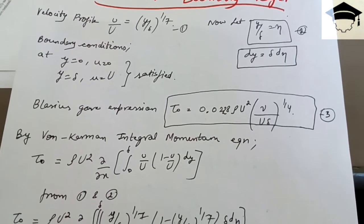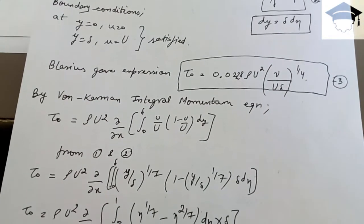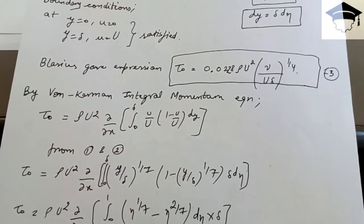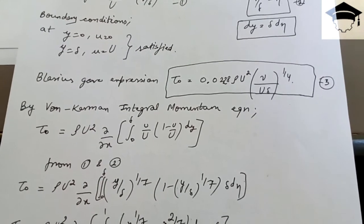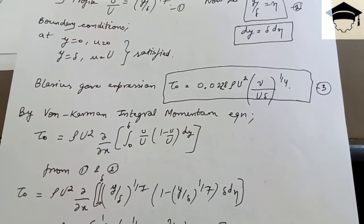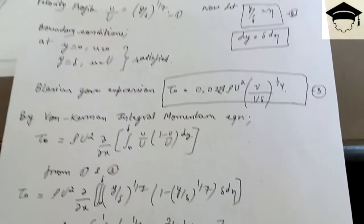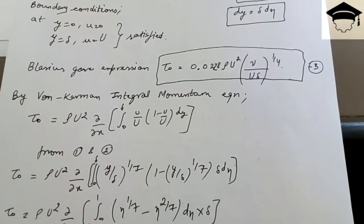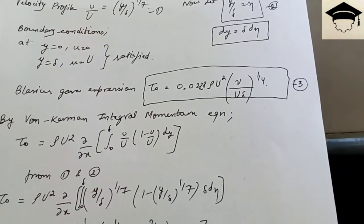Substituting u/U = (y/δ)^(1/7) and letting y/δ = η, the integration limits change from 0 to δ, to 0 to 1 — because when y = 0, η = 0, and when y = δ, η = 1. The integrand becomes η^(1/7) − η^(2/7), multiplied by dη and δ.